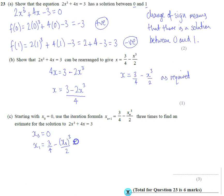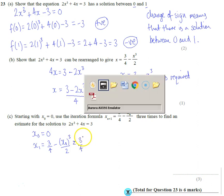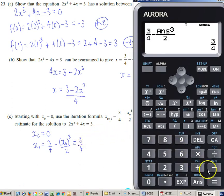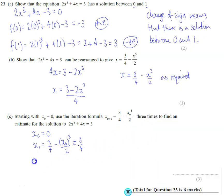The first answer we're putting in is 0. If we push equals once we get 3/4, so the first answer is x₁ = 3/4. All I've got to do now is push equals again, and I get 69/128, which is the decimal 0.5390625. So x₂ = 0.5390625.